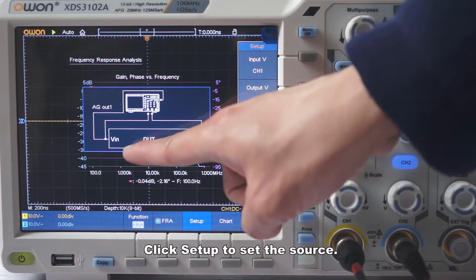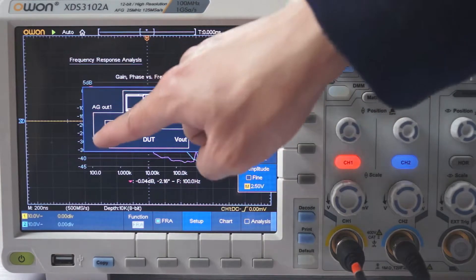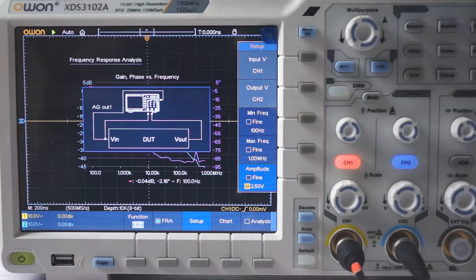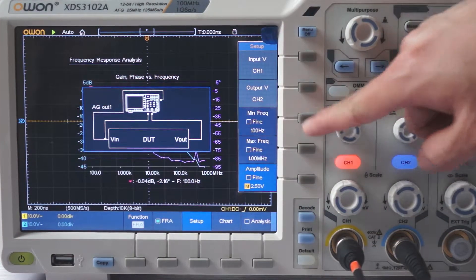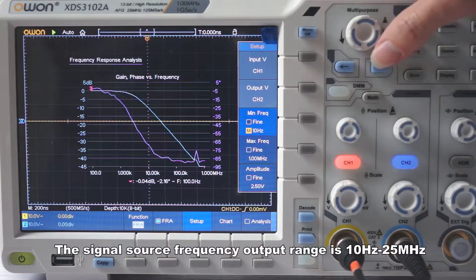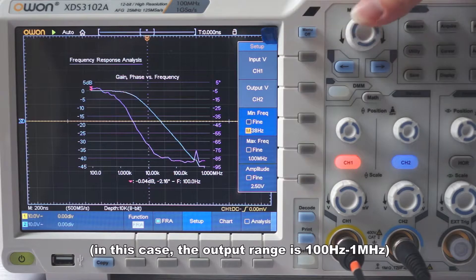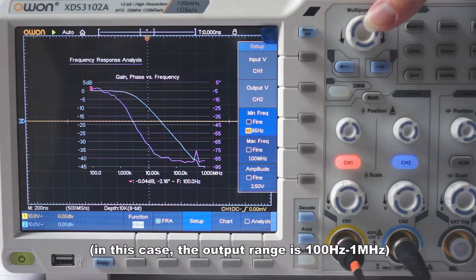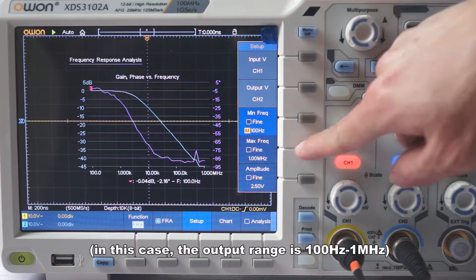Click Setup to set the source. The signal source frequency output range is 10 Hz to 25 MHz. In this case, the output range is 100 Hz to 1 MHz.